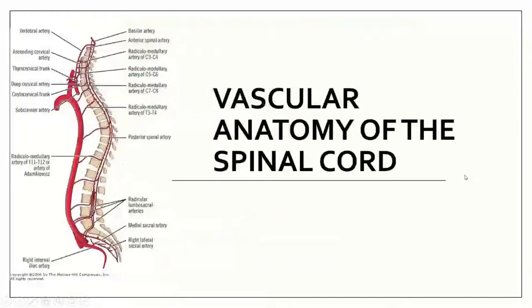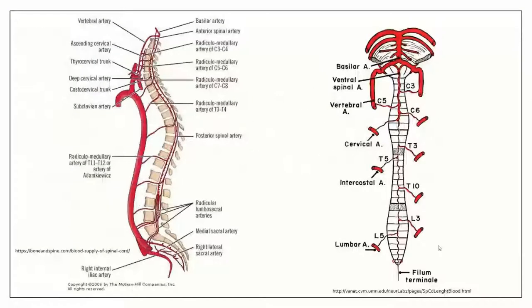Before we talk about abnormal, we should talk about normal. Vascular anatomy of the spinal cord is slightly less reviewed compared to intracranial anatomy. The spinal cord has two major sets of arteries: the anterior spinal artery, shown anteriorly in the diagram, and the posterior spinal arteries — there are two of them, one on each side.